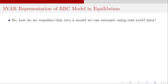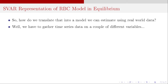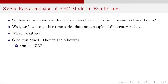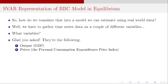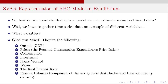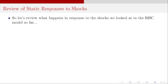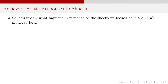So how do we translate all of that into a model we can estimate using real-world data? We go out and get time series. The variables we need to look at are real GDP, personal consumption expenditures price index, consumption, investment, hours worked, wages, real interest rate, and reserve balances. These reserve balances, if you remember, are a component of the monetary base that the Federal Reserve directly controls. So let's review what happens in response to the shocks we looked at in the RBC model.